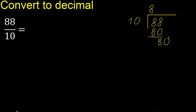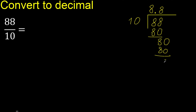Always complete with zero — point zero, perfect. 80. 10 multiplied by which number? Multiplied by 8 is 80. Subtract 0, that is not a number, therefore finish.